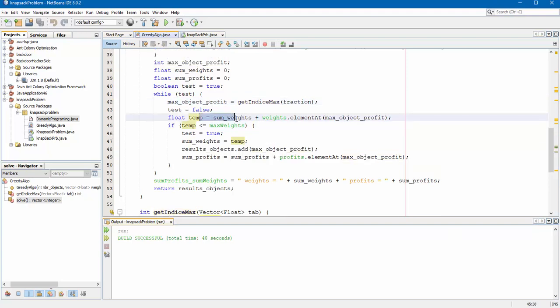In this line, I add the old weights plus the newest weights. And I put the result into temp variable. I compare this variable by the maximum weights. If the condition is verified. The sum weights receives the temp. And I add this object into object vector. After that, I calculate the sum weights.